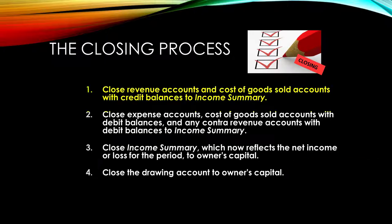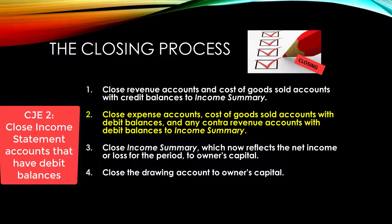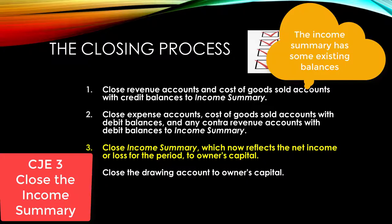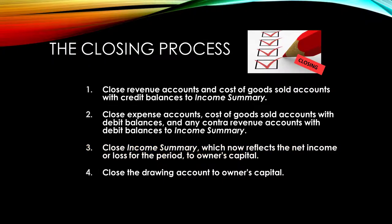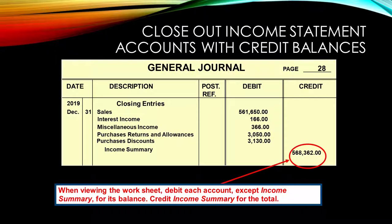On the slide are the steps. First, we'll close the revenue accounts and cost of goods sold accounts with credit balances — an easier way to remember this is to close the income statement accounts that have credit balances. Next, we'll close the income statement accounts that have debit balances. Third, we'll close the income summary to the capital account, being careful because the income summary now has existing balances from the inventory adjustment. Then, just as before, we'll close the drawing.